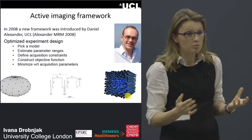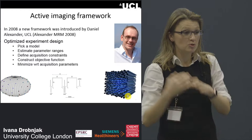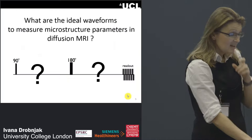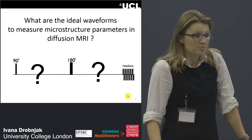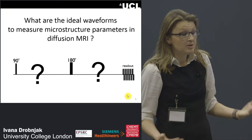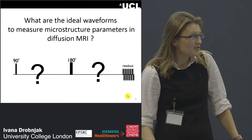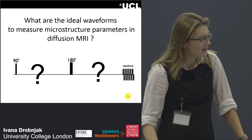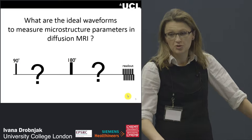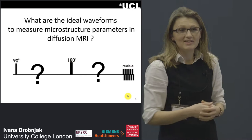Danny received a leadership fellowship in 2008 and employed two postdocs: Gary Zhang to develop modeling work, and me to work on the sequences themselves and try to optimize and improve them. When I came to UCL in 2009 as a postdoc, I had just finished my PhD at Oxford's FMRIB centre working on MRI simulations — I had not really done any diffusion MRI before.